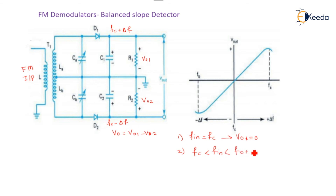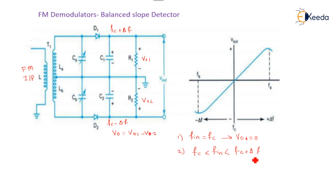The second case: fc < f_in < fc plus Δf. In this range of input frequency, the induced voltage in winding T1 is higher than that of T2, so the input voltage to diode D1 is higher than diode D2. Hence the positive output voltage V01 will be higher than V02, and therefore the output voltage V0 is positive. As the input frequency increases toward fc plus Δf, the positive output voltage increases.